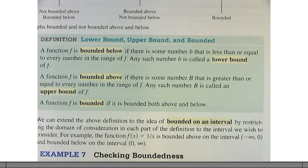Let me read that again. A function F is bounded below if there is some number B that is less than or equal to every number in the range. That's the minimum value, B. Everything else is higher than that. Everything else is greater than that. So we say that B is the lower bound of F.